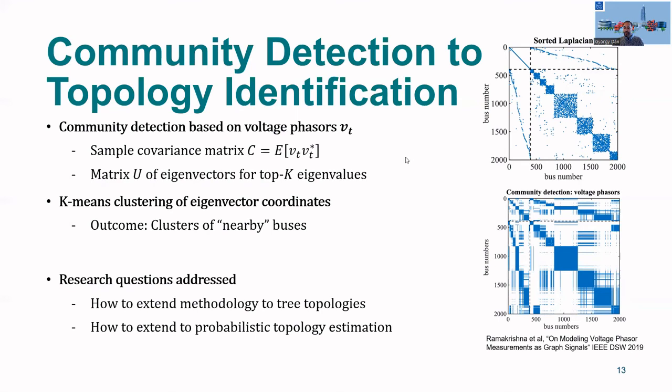On the right-hand side, I show you an example that compares this approach in terms of the actual topology at the top. You see the sorted Laplacian. And there is a lot of community detection using this approach. What you see is that the detected communities are fairly close to the actual communities in this power system. Now, these results are from a power transmission system. The question is, can we extend the methodology to tree topologies, which is the case for distribution systems, and how to combine this approach with probabilistic topology estimation to actually get the topology and not only the communities.